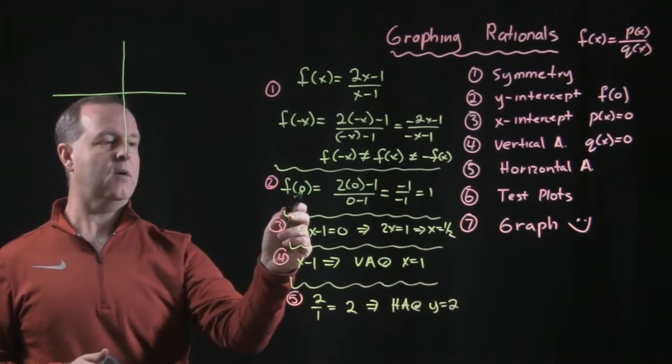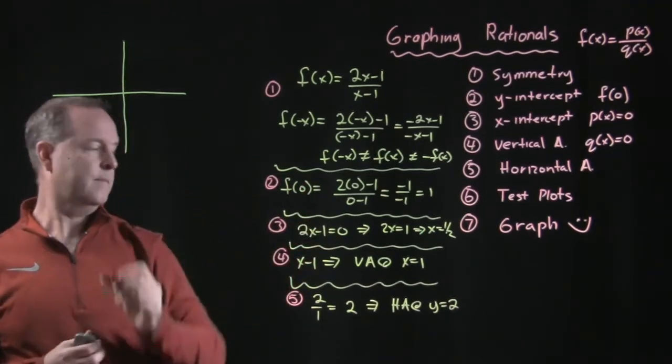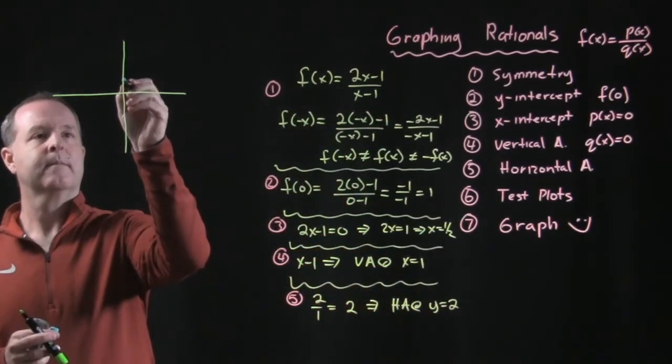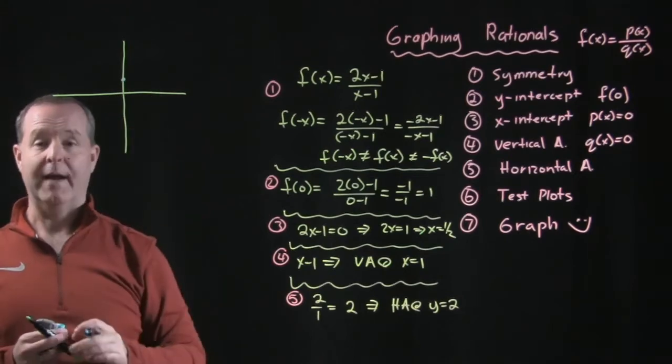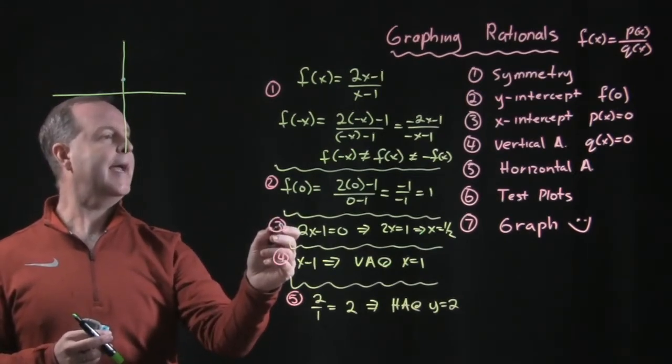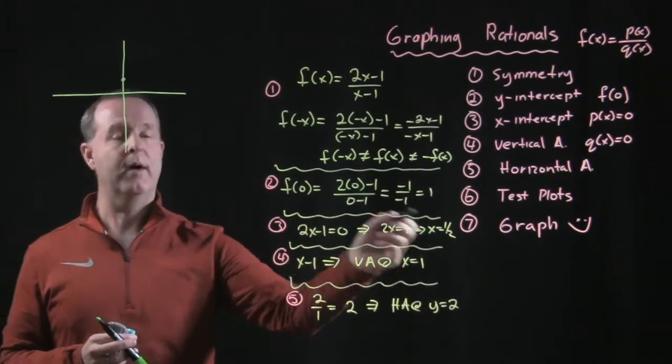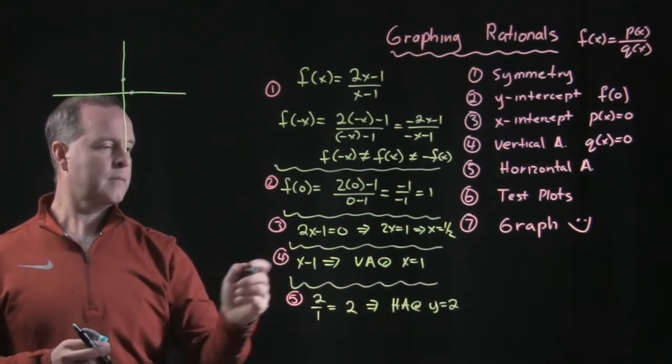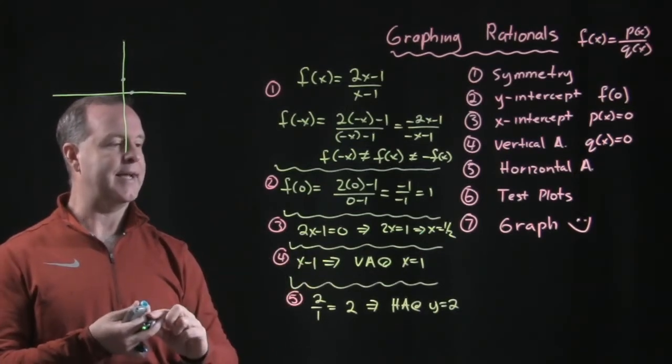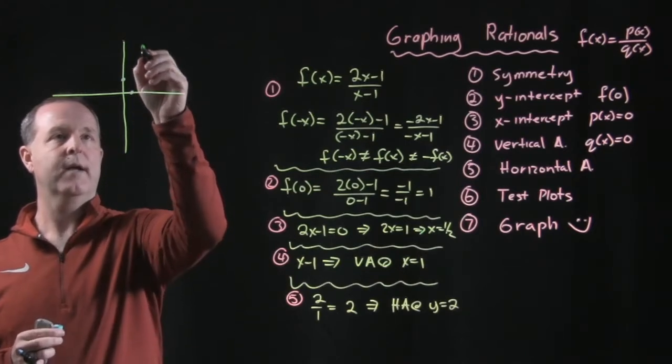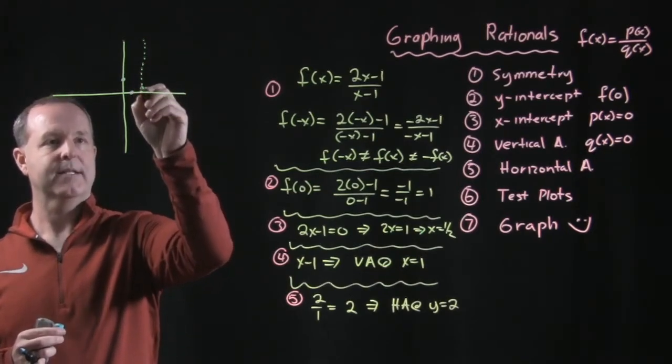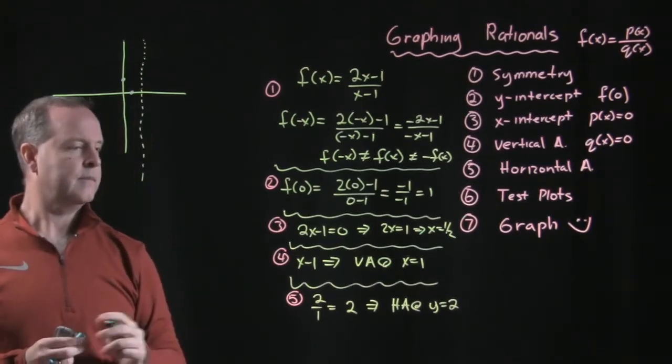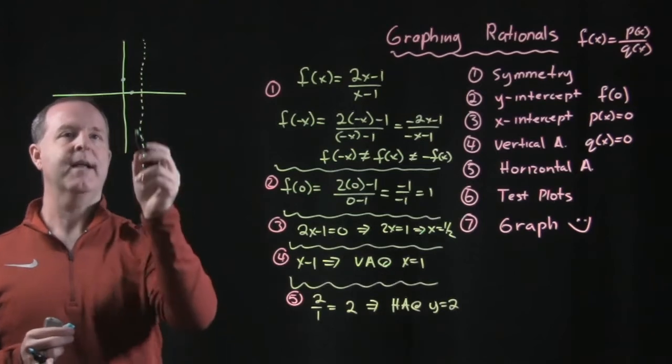f of 0 is x equals 0. I have a y-intercept at 1. So I have one point there. The next one told me I have an x-intercept at one half. So my graph crosses at one half. I have a vertical asymptote at x equals 1. There's 1. So there's some type of vertical asymptote right about there. Sorry, it's supposed to be straight. And I have a horizontal asymptote at line y equals 2.